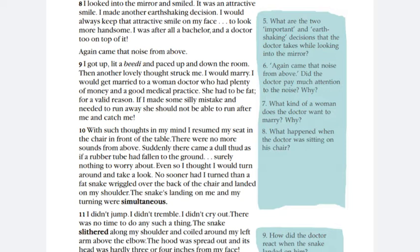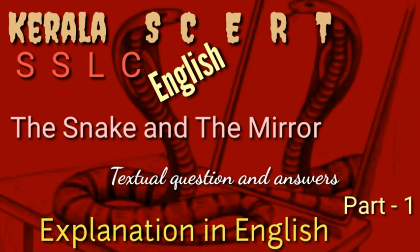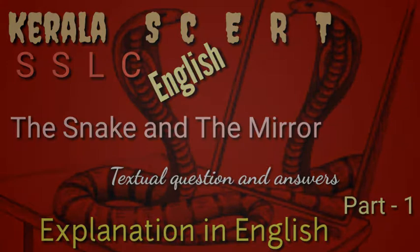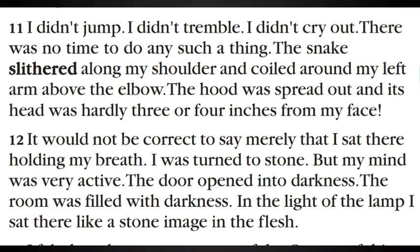Suddenly something like a rubber tube fell on the floor — it was a snake. It wriggled over the back of the chair and landed on his shoulder. These things were discussed in part one. Now let us move to discuss the rest of the lesson, from page number 25, starting at the 11th paragraph.